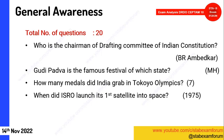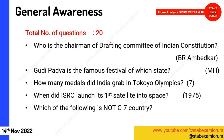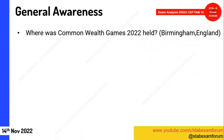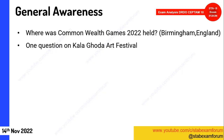When did ISRO launch its first satellite into space? The answer is 1975. Summit-related questions have been continuously coming in all shifts — students with one day left can prepare all India-related summits. Who is the highest law officer? That is the Attorney General of India. Coming to the next: from Commonwealth Games, they asked where it was held — Birmingham, England.